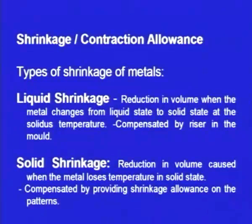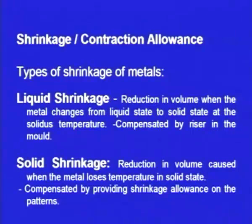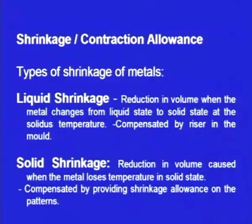Solid shrinkage is caused when the metal loses its temperature during the solid state. We may require a particular size of a casting, and if we make a pattern exactly the same size as the required casting, the mould cavity will have the same size. We pour the molten metal, and as the solid metal loses its temperature during solidification, it undergoes shrinkage and the size becomes smaller. To counteract this effect, we have to make the pattern size a little bigger than the size of the casting. This is the shrinkage allowance.